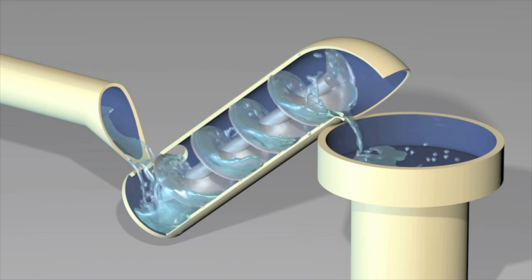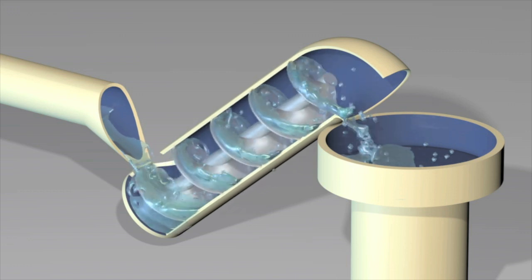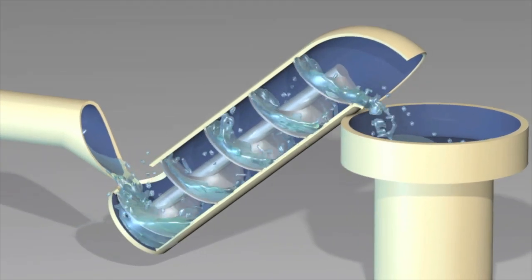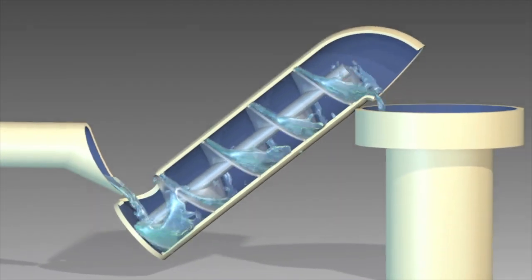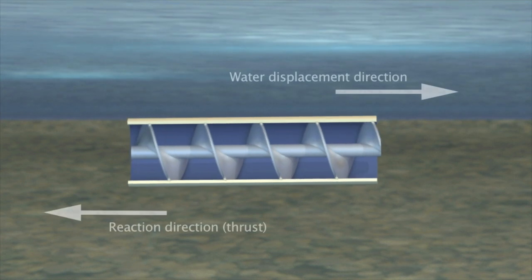It was soon realized that the same principle could be used to displace liquids, providing an effective way of causing a flow of material. When the Archimedes screw is submerged, a thrust is created by the displacement of water.